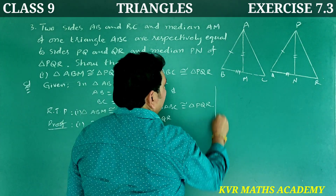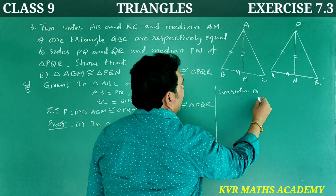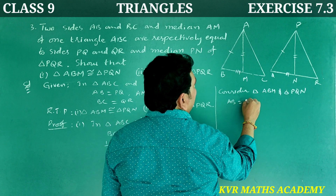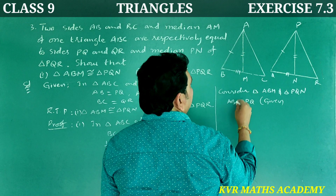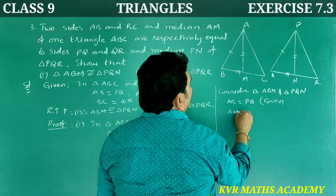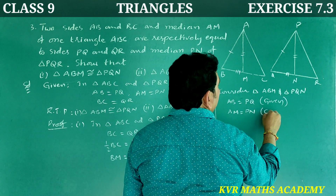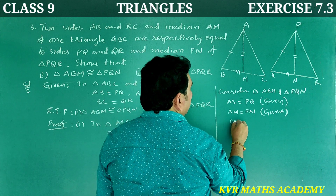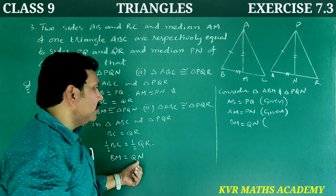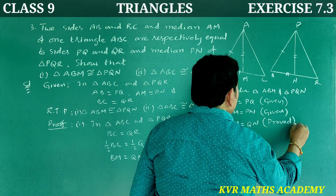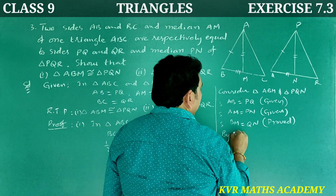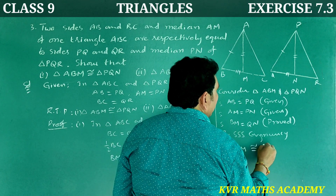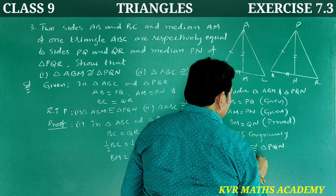Now let's prove triangle ABM is congruent to triangle PQN. Consider triangle ABM and triangle PQN. In these two triangles: AB is equal to PQ (given), AM is equal to PN (given), and BM is equal to QN (just proved). By SSS congruency, triangle ABM is congruent to triangle PQN. Hence proved.